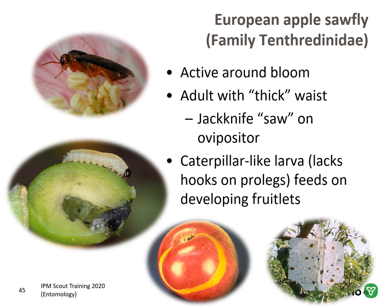European apple sawfly is an introduced pest also active around bloom, making it challenging to control because females are laying eggs during a time when spraying insecticides is not permitted by legislation. The female has a jackknife-like saw on her ovipositor that she uses to saw into plant tissues and lay her eggs. The larvae are caterpillar-like — they're sawflies, so they have prolegs but no crochets on the prolegs. They feed on developing fruitlets, and fruit that doesn't fall to the ground has characteristic scars left behind at harvest. European apple sawfly is monitored using white sticky trap-type traps.